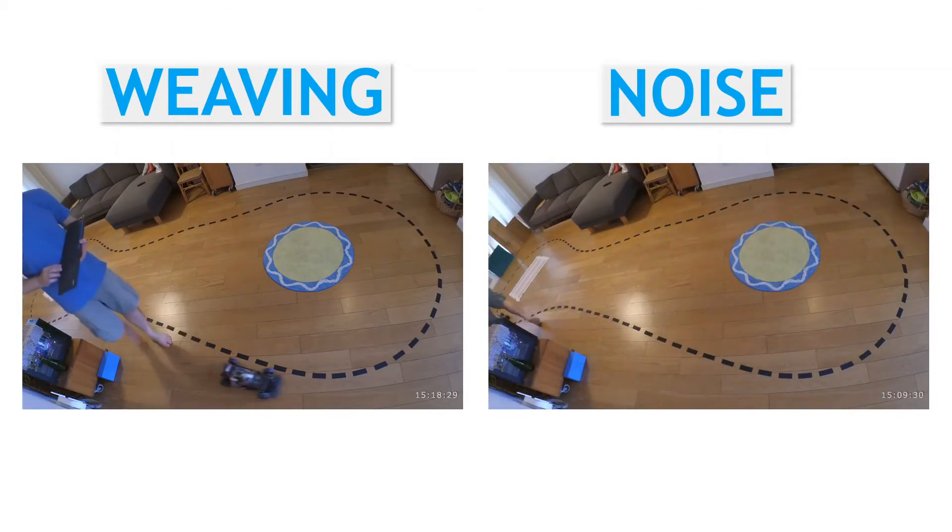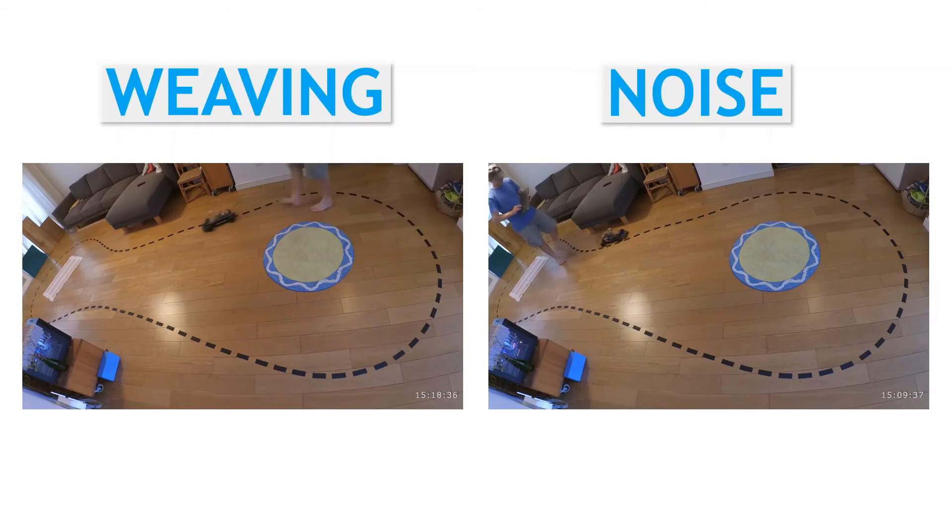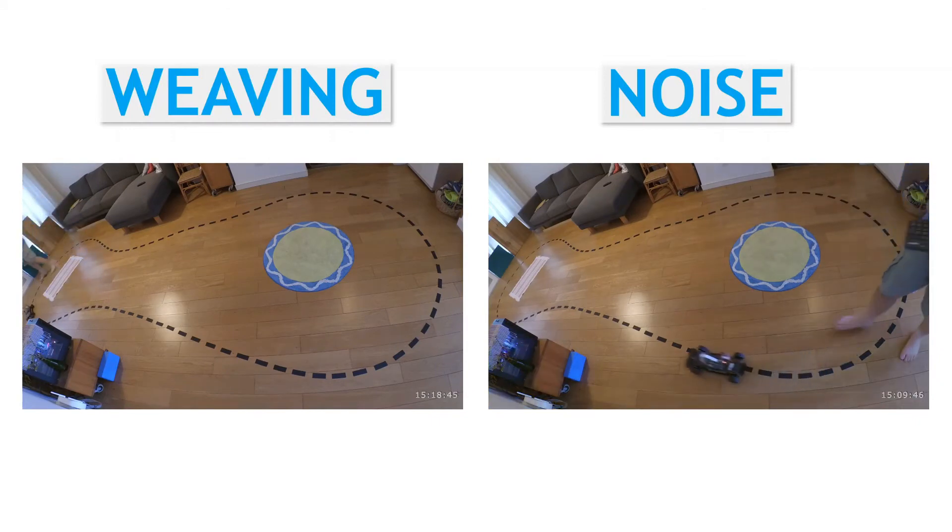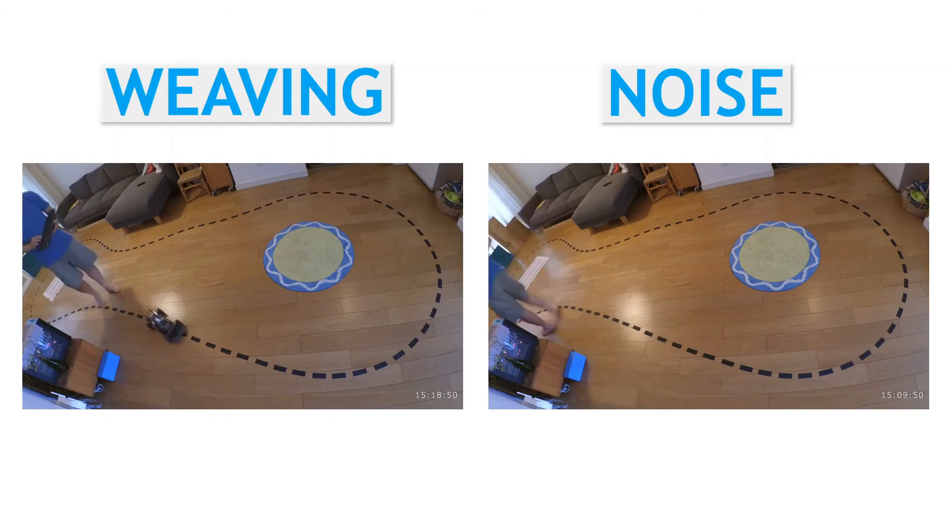I ended up collecting around 4000 additional images with the manual weaving approach. And about the same amount with noise injection. So armed with our newly collected data, we went and trained two new policy models. Let's have a look at how things went.